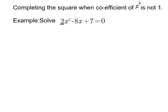Whatever this number is, we are going to divide through and take out a factor of 2 in this case. Dividing by 2 gives me x squared. Dividing by 2 gives me minus 4x. Dividing by 2 gives me 7 over 2. Now I've got it where the coefficient of x squared is 1.